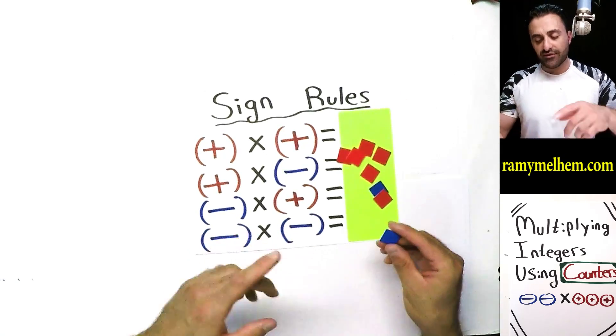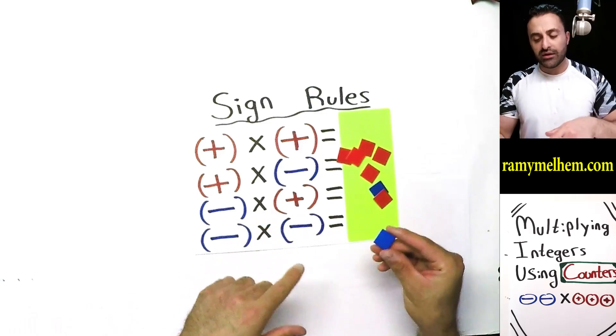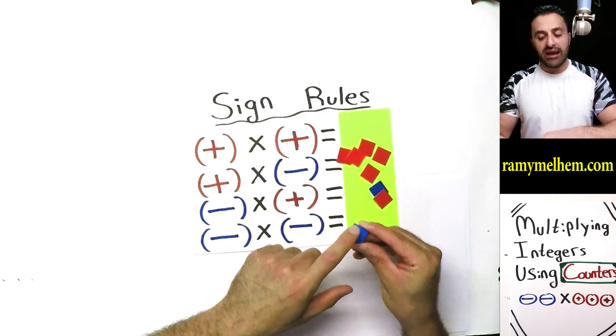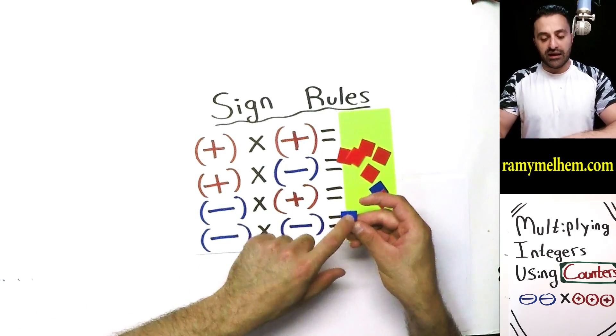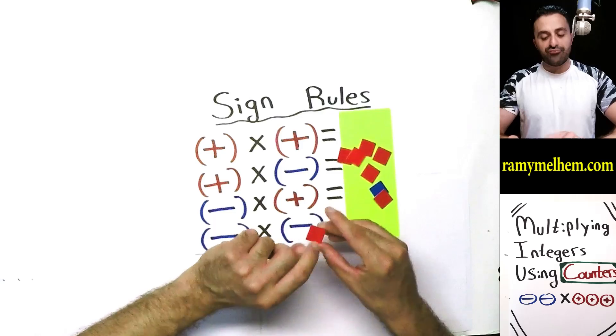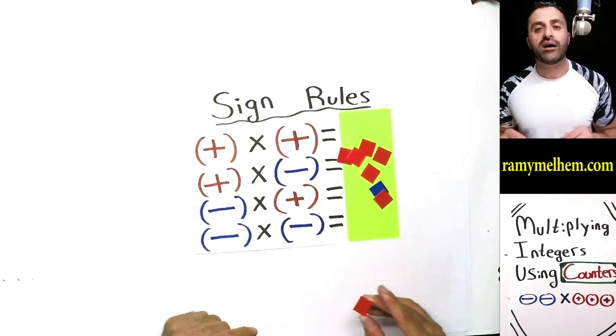Let's review these really quickly. These here are going to represent negatives — the blue are negatives, just like the code here — and the red are going to be the positives.